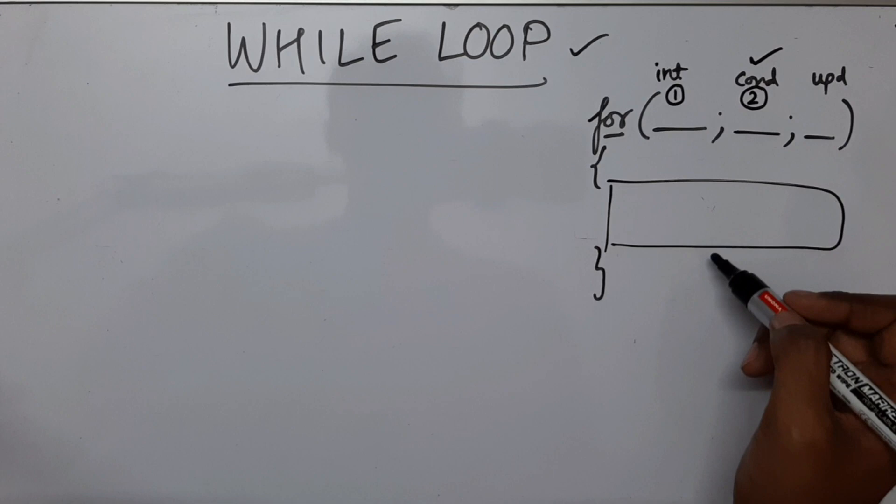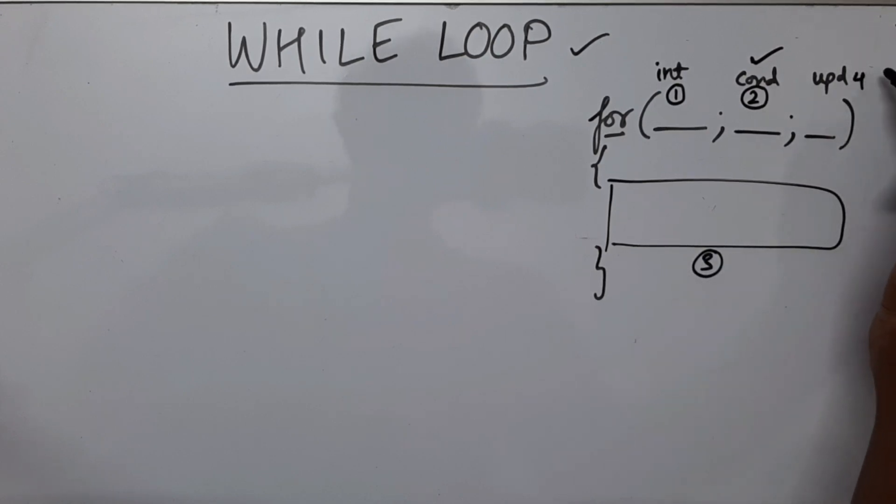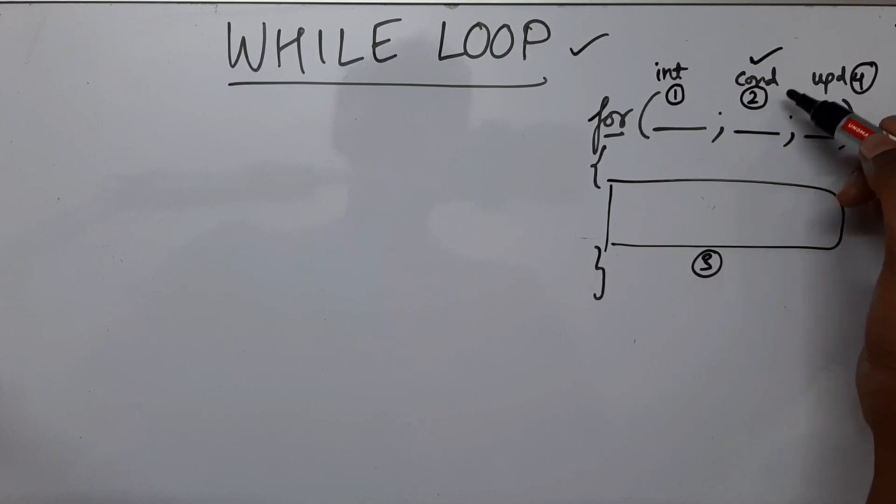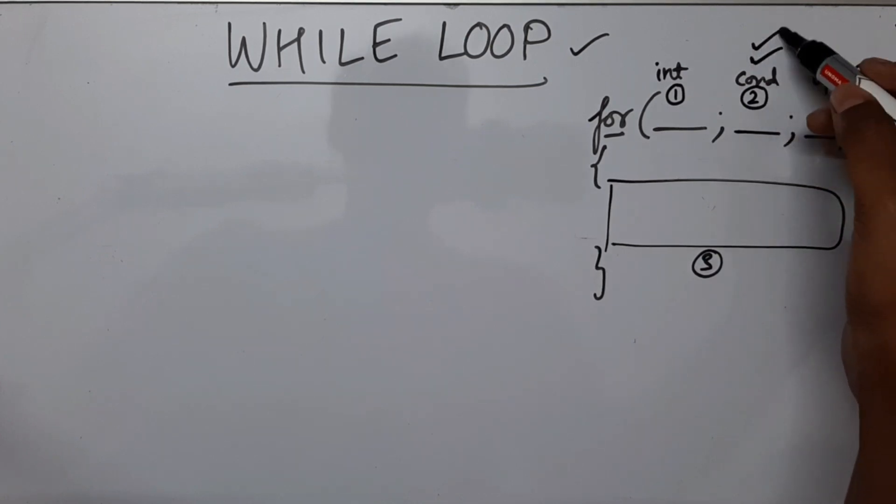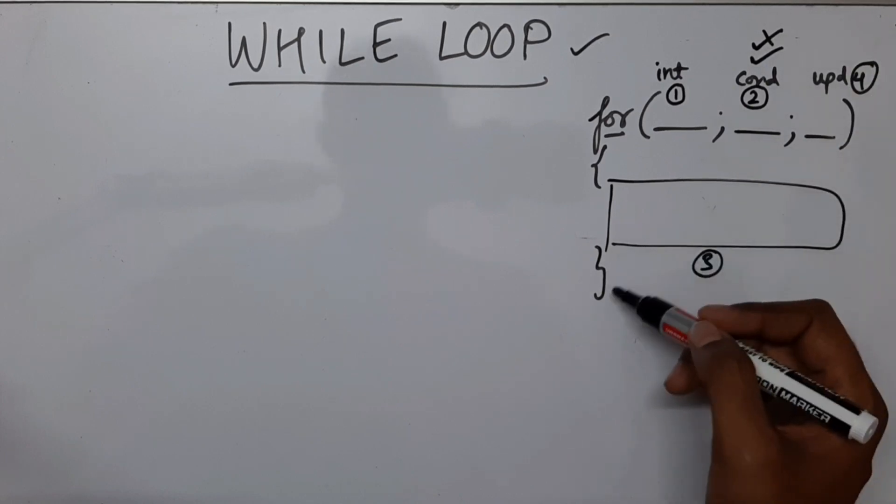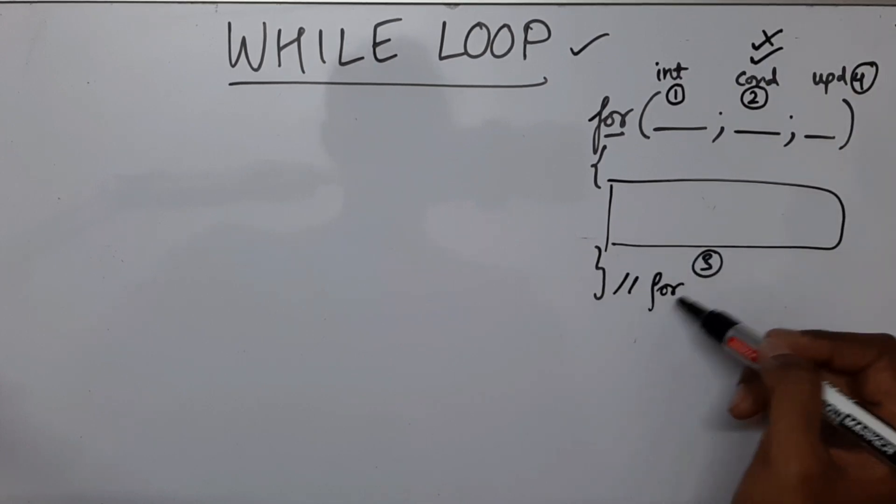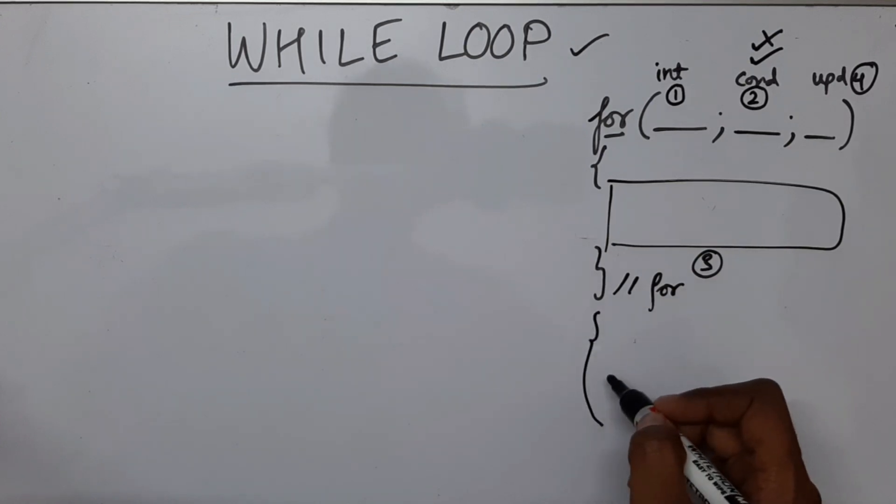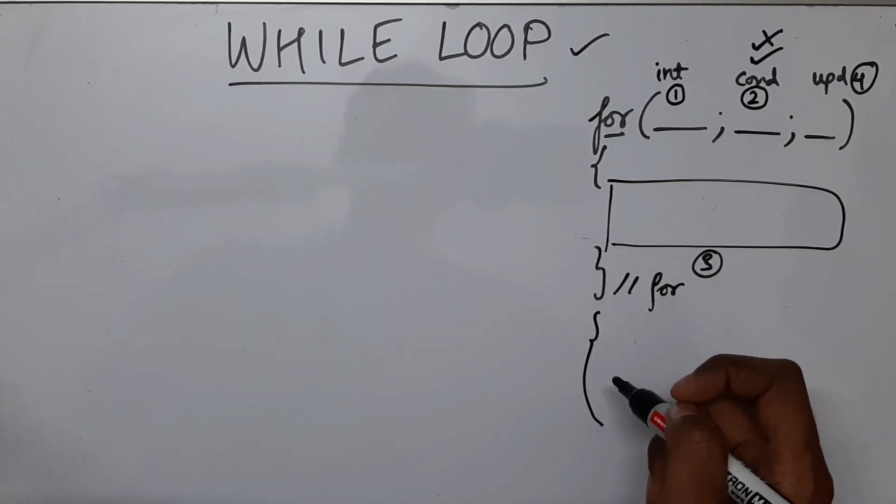Then we come to the updation part and we update the variable. Once the updation is done, we again check if it falls under the condition. If it is true, again we come inside the body. If it becomes false, we come outside of the for loop. And hence our loop ends over here and then we will execute whatever is after the for loop.